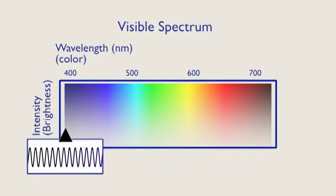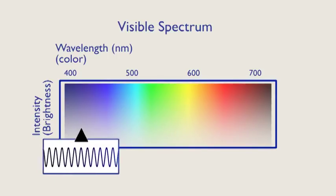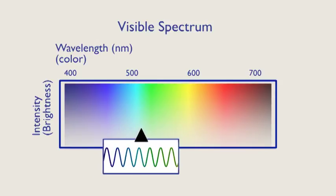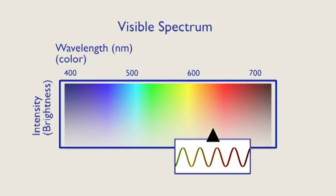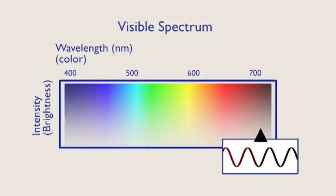If light waves are very close together, in the 400 nanometer range, we perceive the color violet. And if the waves are far apart, in the 750 nanometer range, we perceive red.